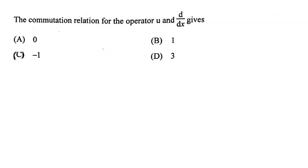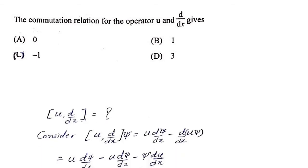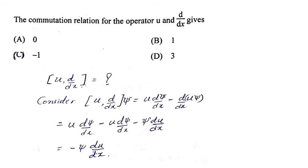Next: the commutation relation for the operator U and d/dx. We write [U, d/dx]ψ = U·(dψ/dx) − (d/dx)(U·ψ) = U·(dψ/dx) − ψ·(dU/dx) − U·(dψ/dx) = −ψ·(dU/dx). If U is independent of x, this is 0 (option A). If U = x, then dU/dx = 1, giving −1. Both 0 and −1 are possible, and the question is not entirely clear.